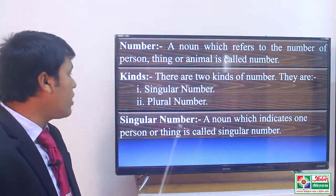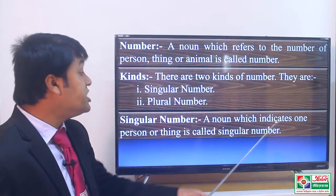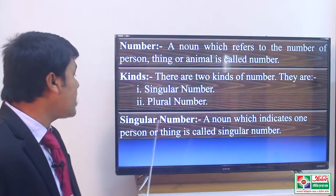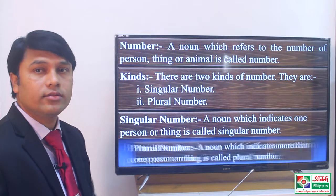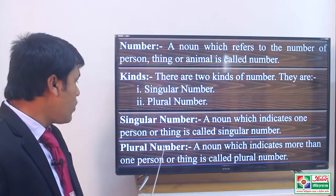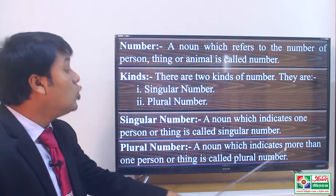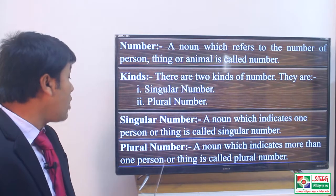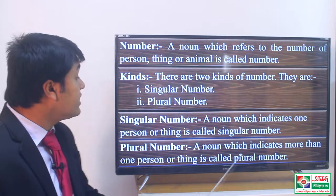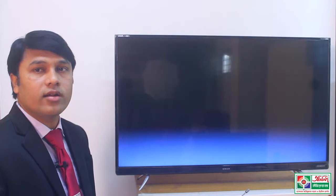Singular number. A noun which indicates one person or thing is called singular number. Plural number. A noun which indicates more than one person or thing is called plural number.